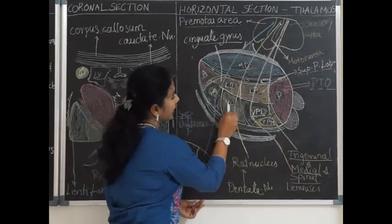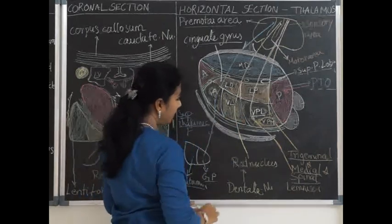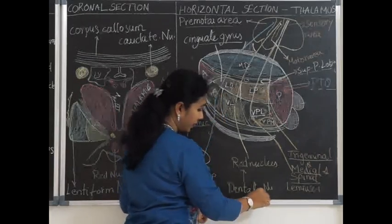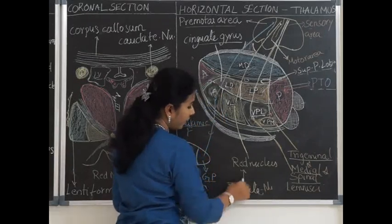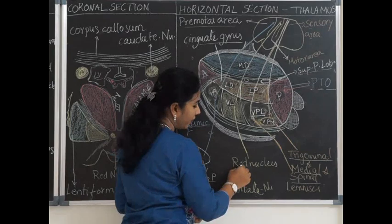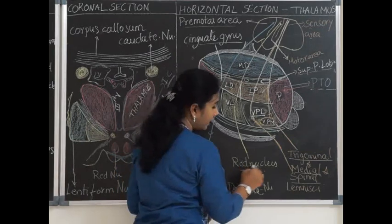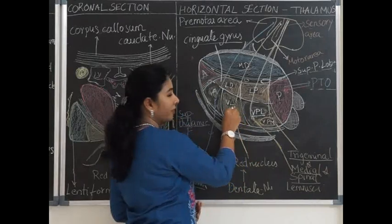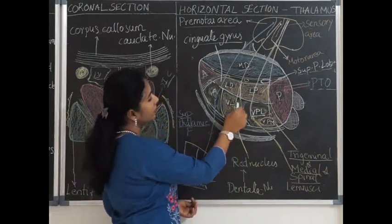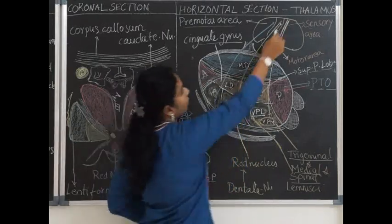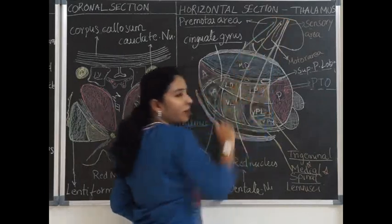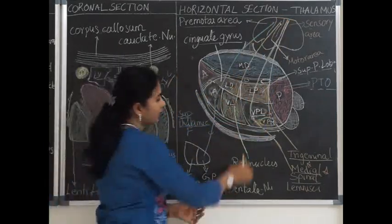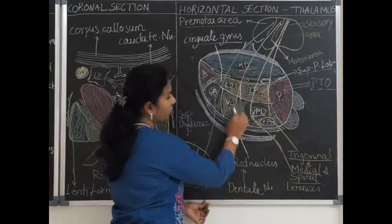The ventral lateral nucleus connects to the dentate nucleus of the cerebellum. From the dentate nucleus, fibers relay in the red nucleus of the midbrain and from the red nucleus they end in the ventral lateral nucleus of the thalamus, which then projects to the motor area of the brain for proprioceptive senses. This tract is called the dentato-rubro-thalamic tract.